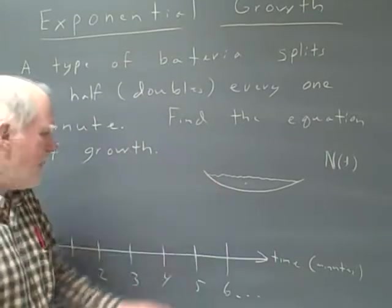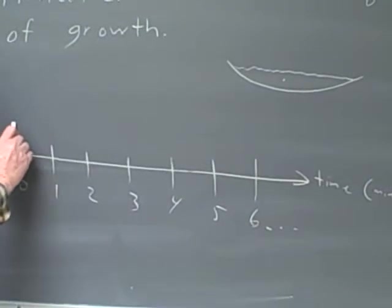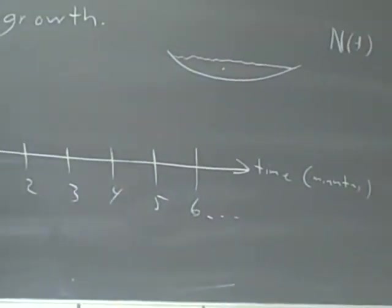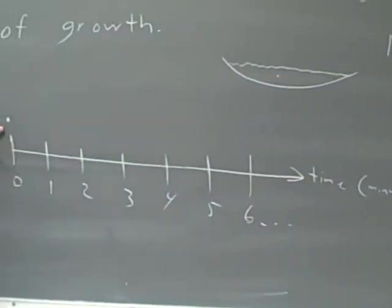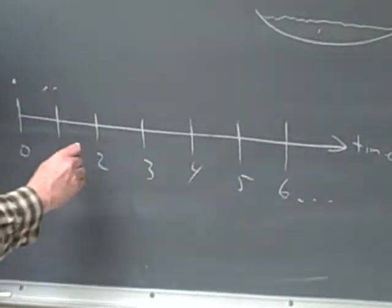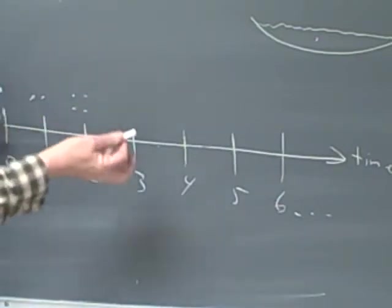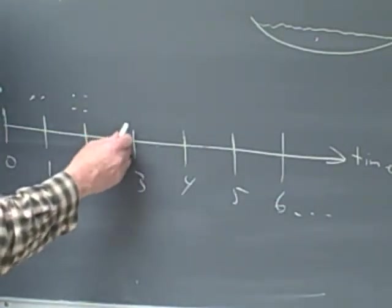We're going to start by taking a number line like this, time in minutes. At zero we only have one of these little creatures. But after one minute we've got two. And after two minutes we've got four of them, because they all split in half every minute. And then we've got eight.